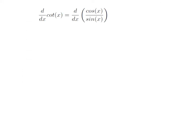As we know, cotangent of x is equal to cosine of x divided by sine of x. So, differentiation of cotangent of x with respect to x is equal to differentiation of cosine of x divided by sine of x, with respect to x.